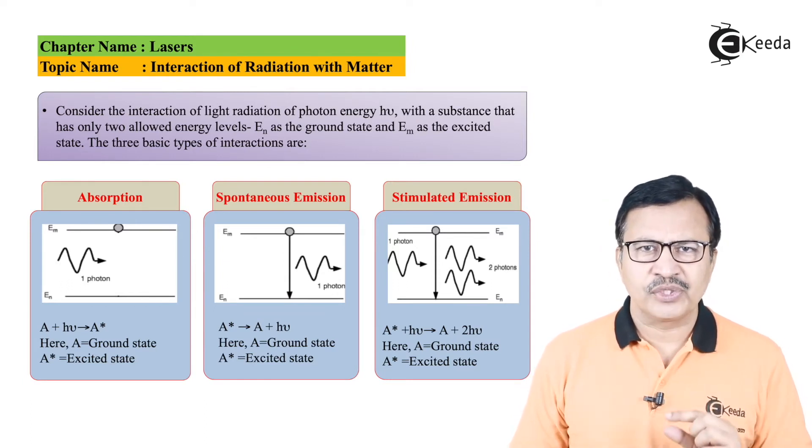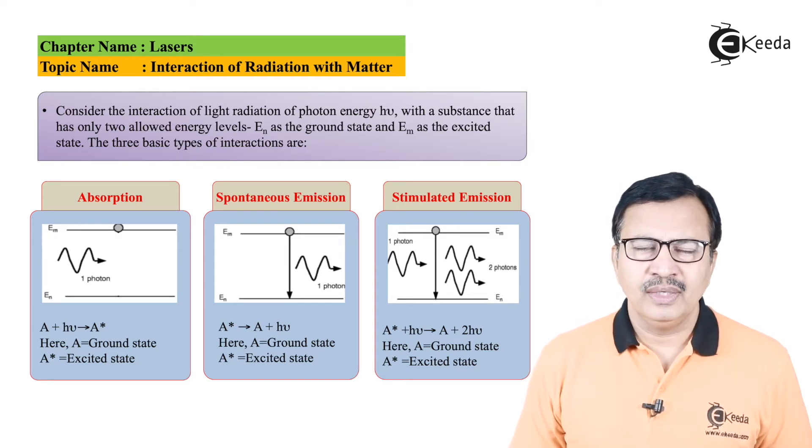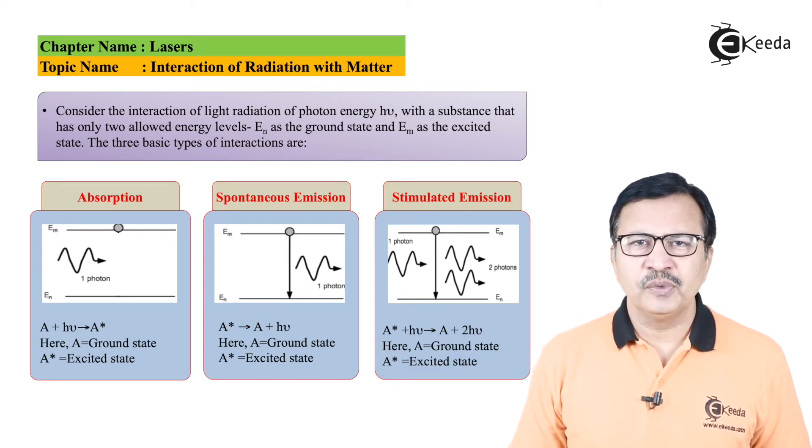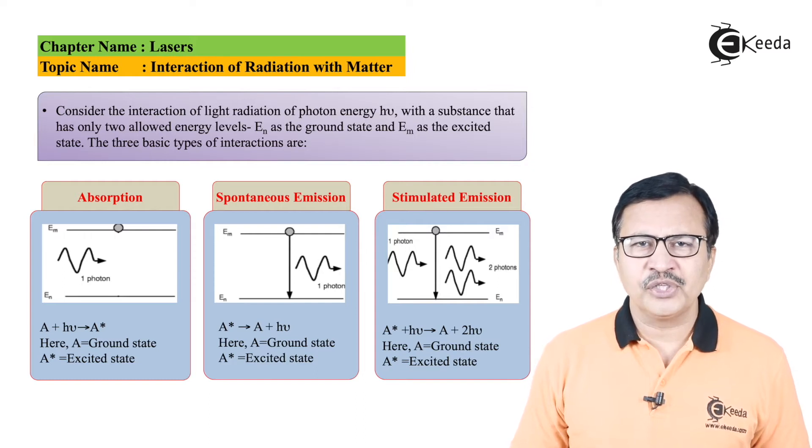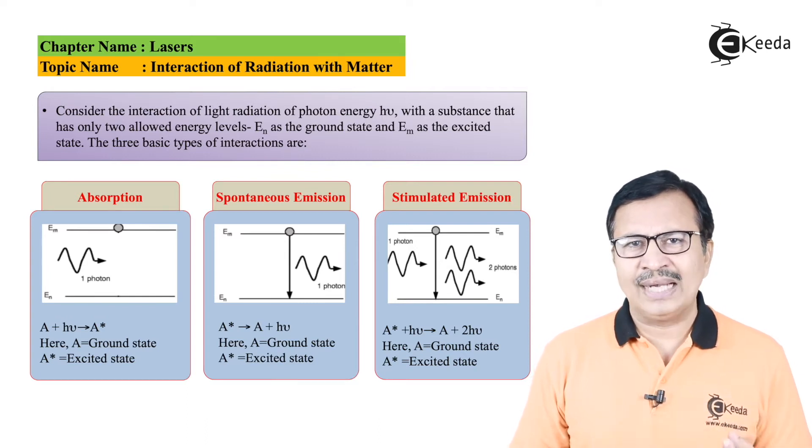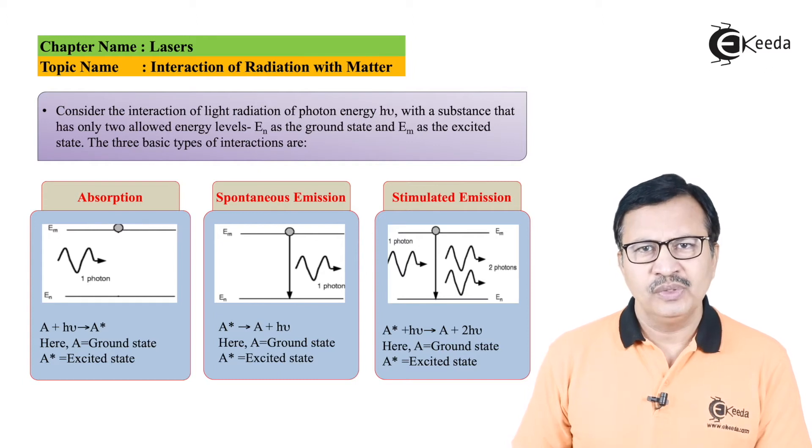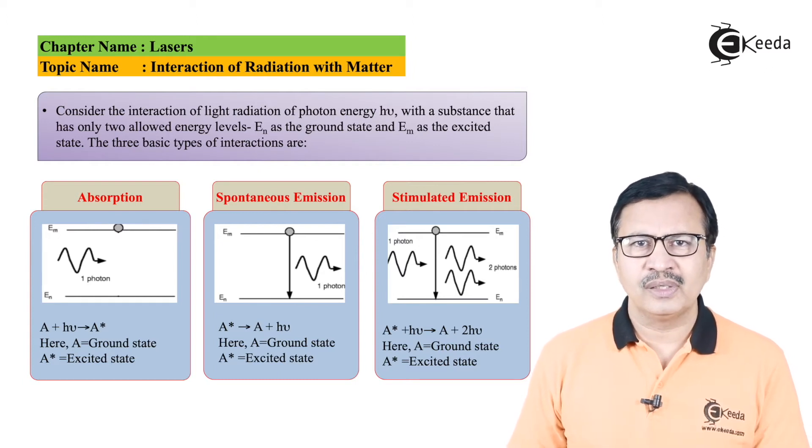This particular absorption can be represented by a very simple equation: A + hν = A*, wherein hν is the photon energy. This is going to be represented by a very simple equation: the atom A which is in the ground state will absorb energy hν and will get excited to a higher energy level equal to A*.